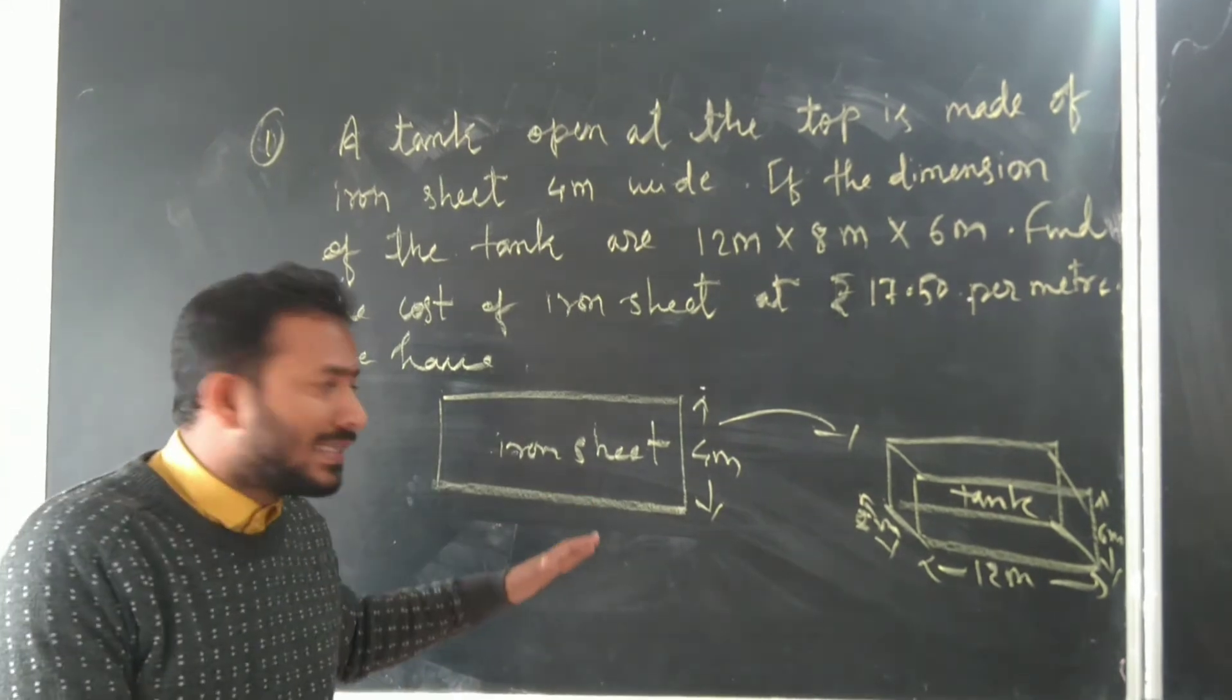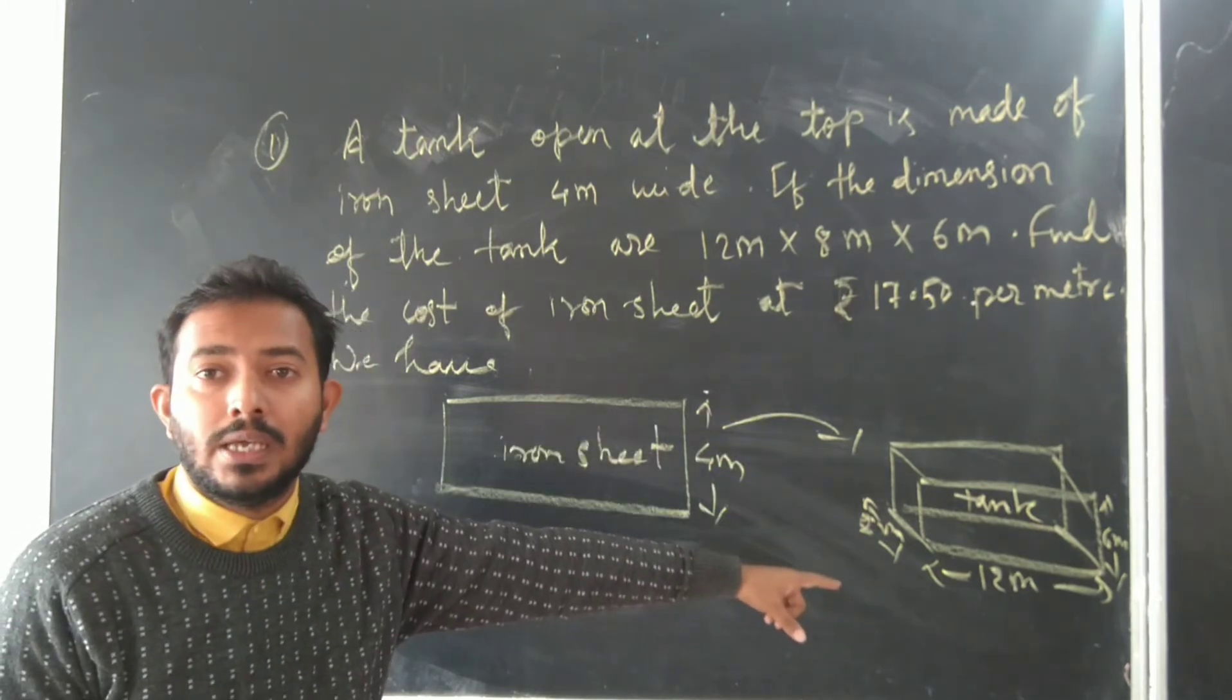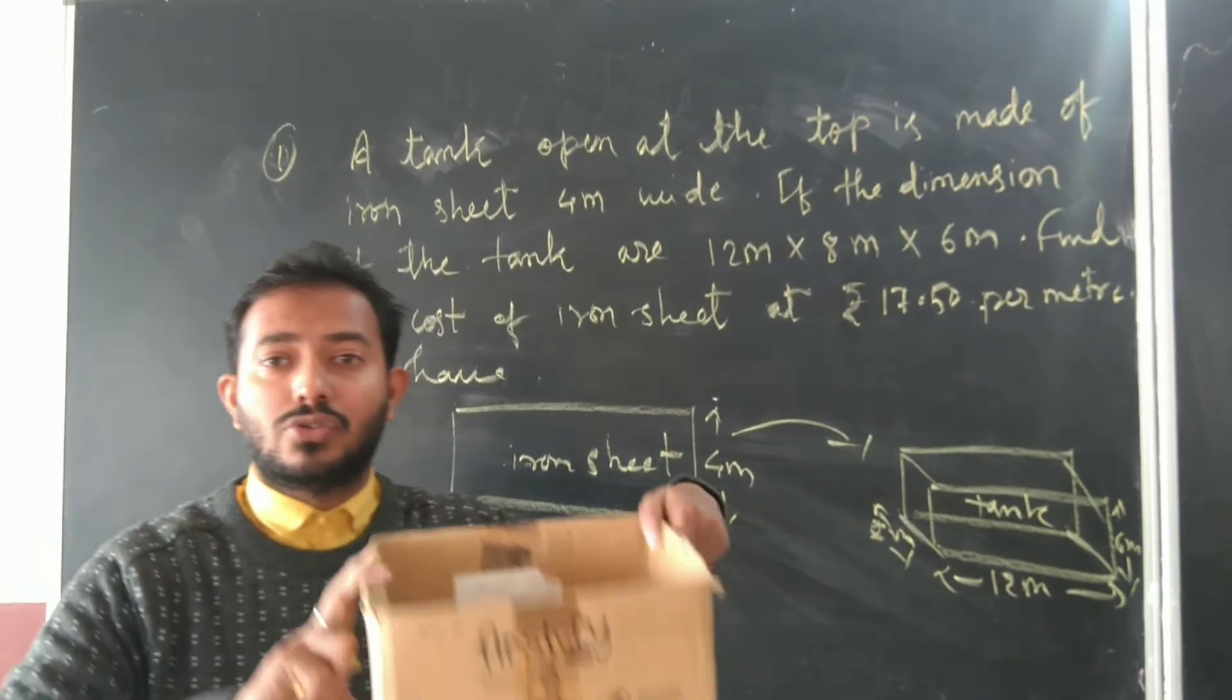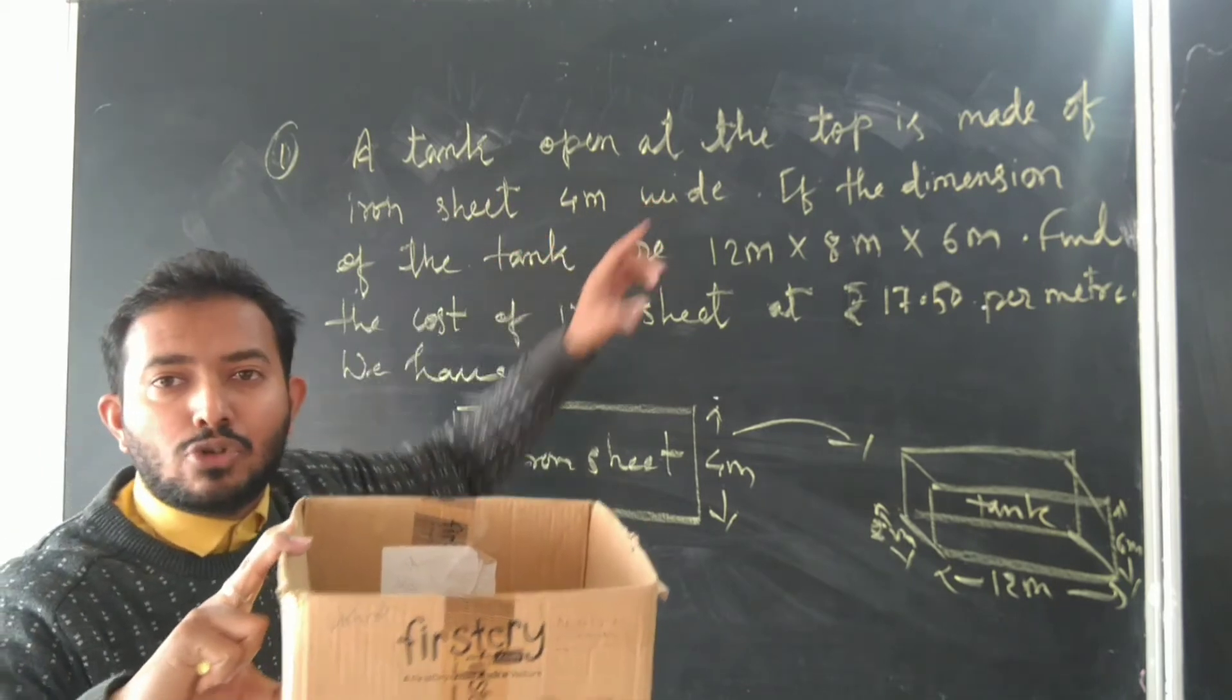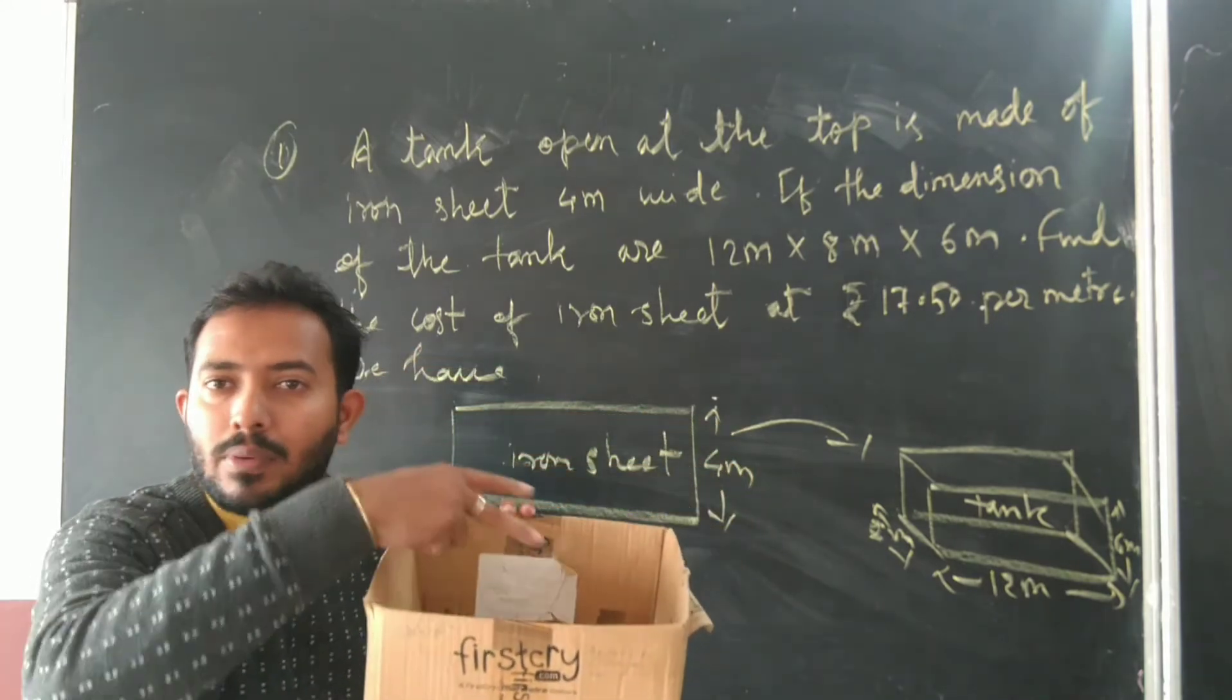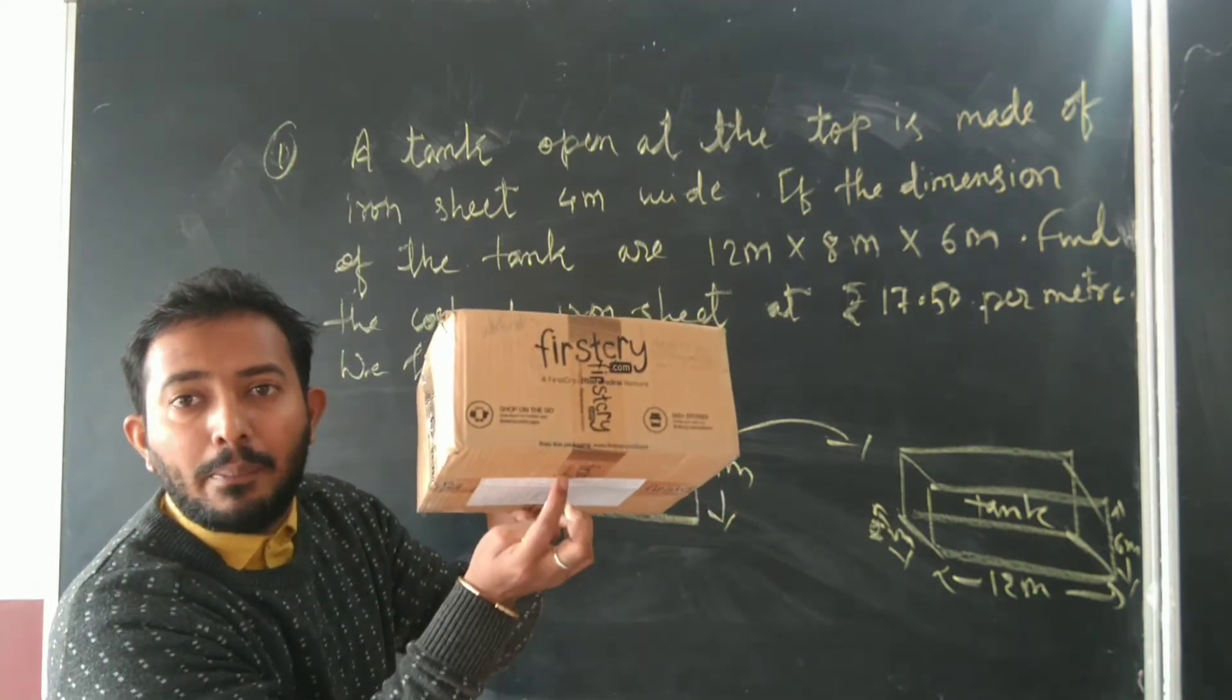From this we can see that area of iron sheet must equal the area of the tank. Actually, if you see this box, a tank open at the top means you need to find the area of four walls plus base area.